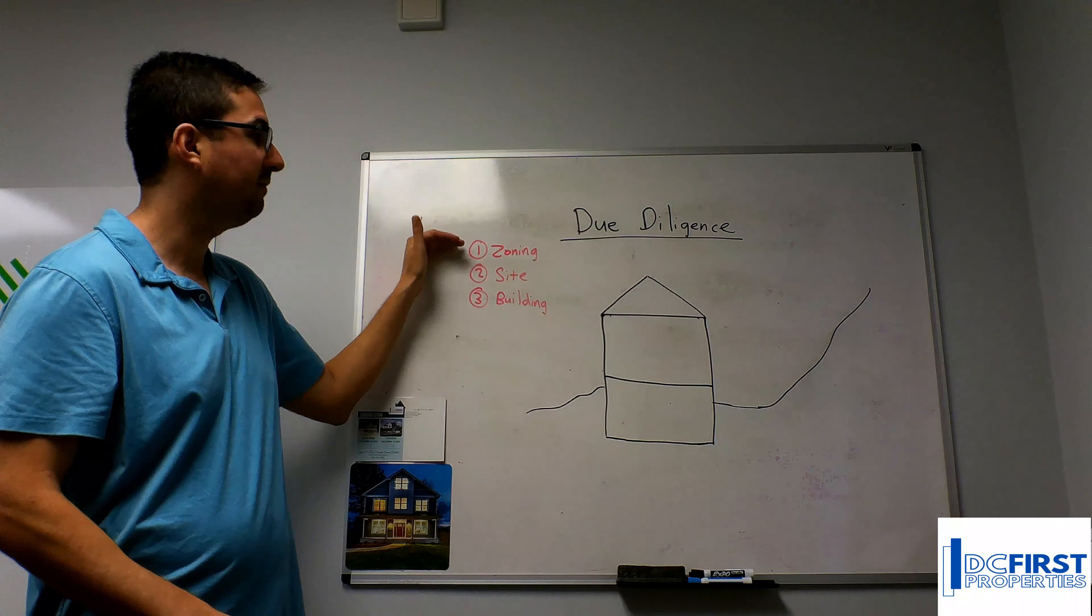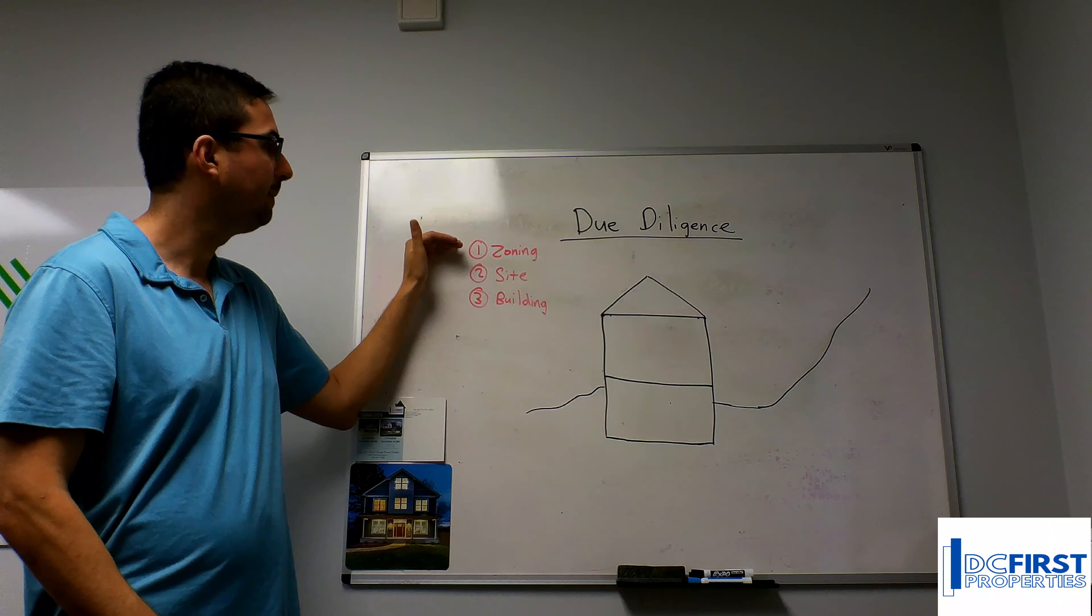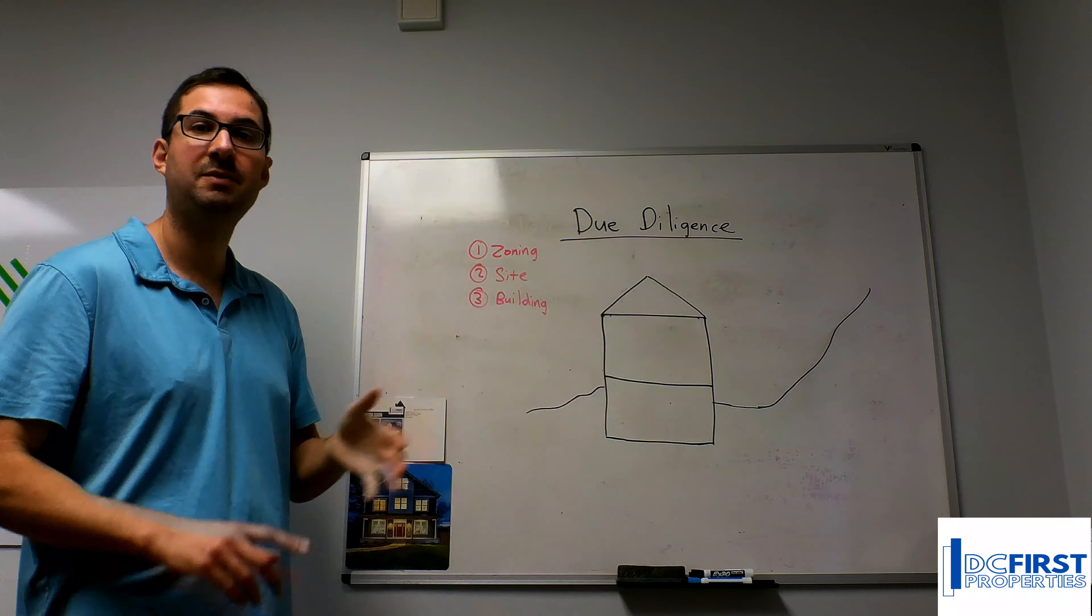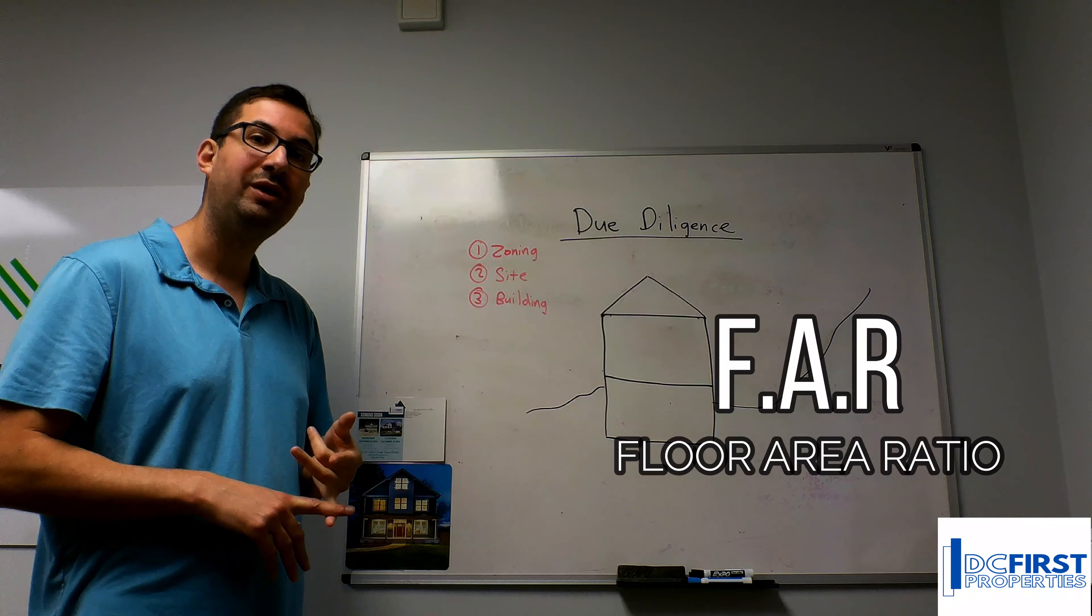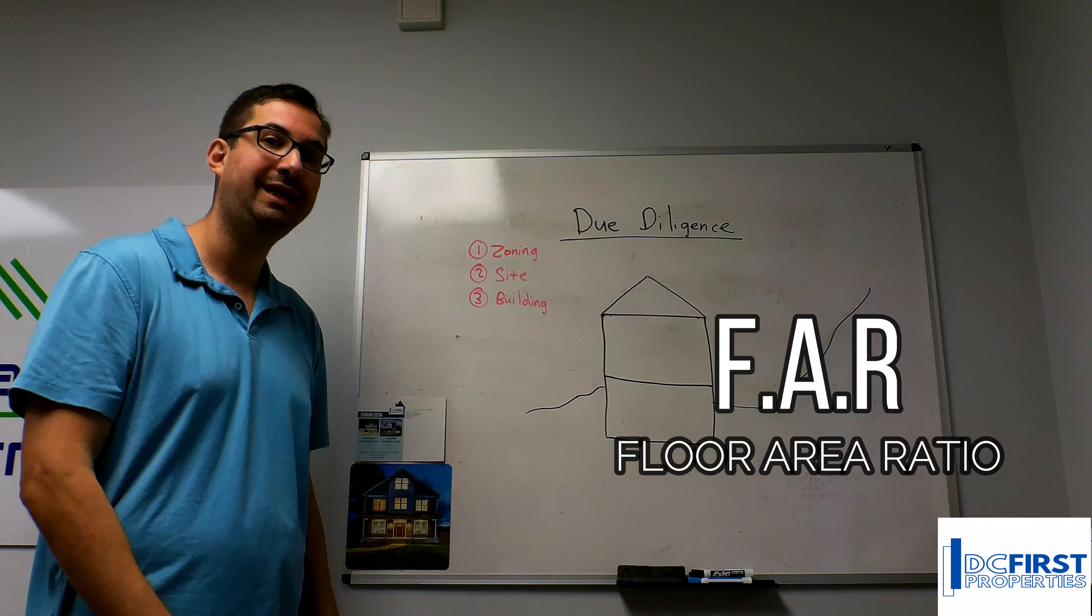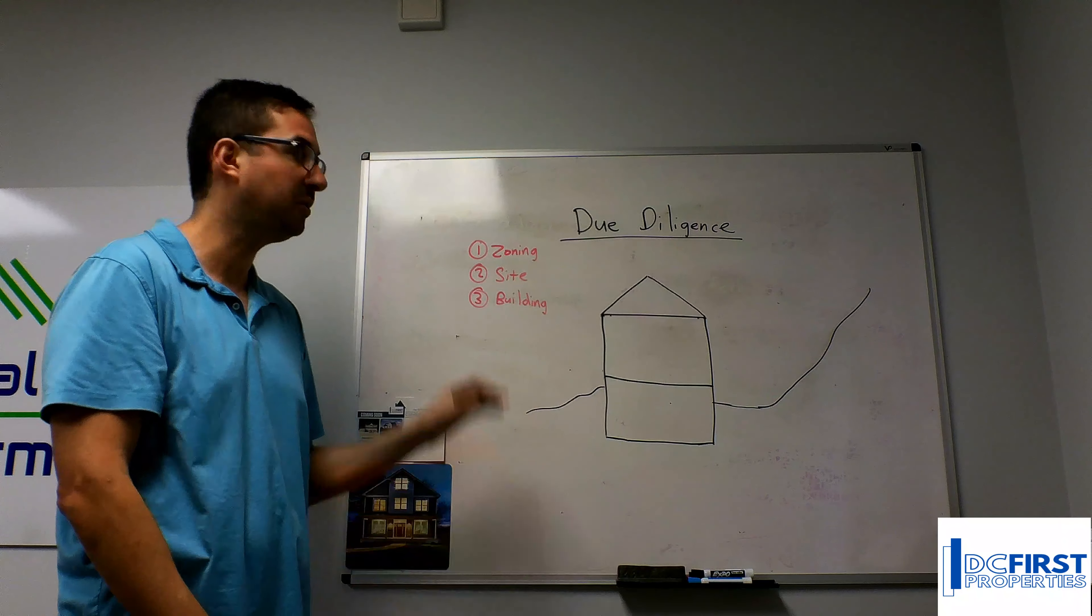Zoning affects all those different aspects of the project. The last piece of zoning is something called FAR - floor area ratio. How many square feet can you put on that parcel? Zoning is going to be involved in that.